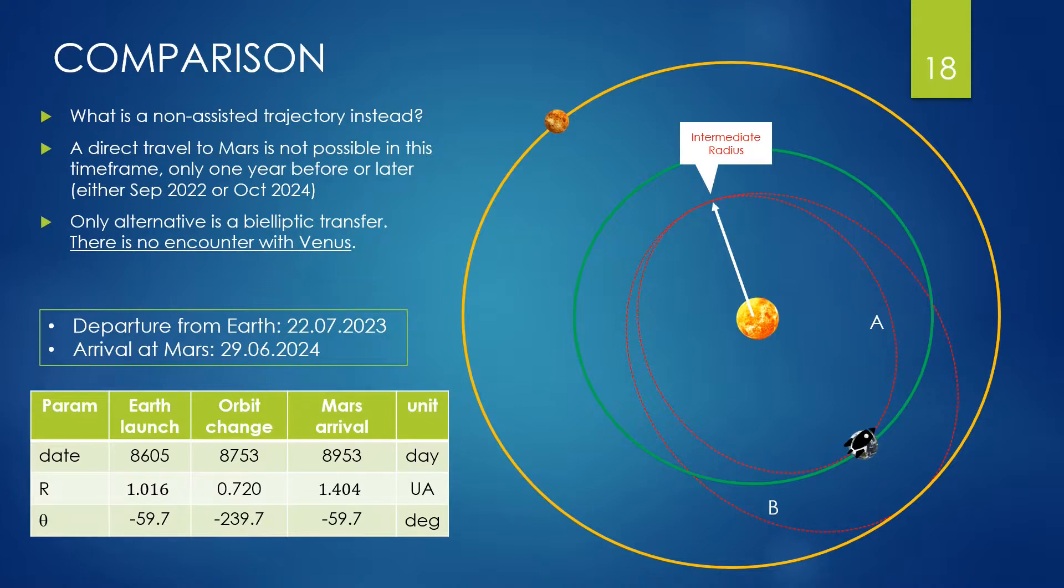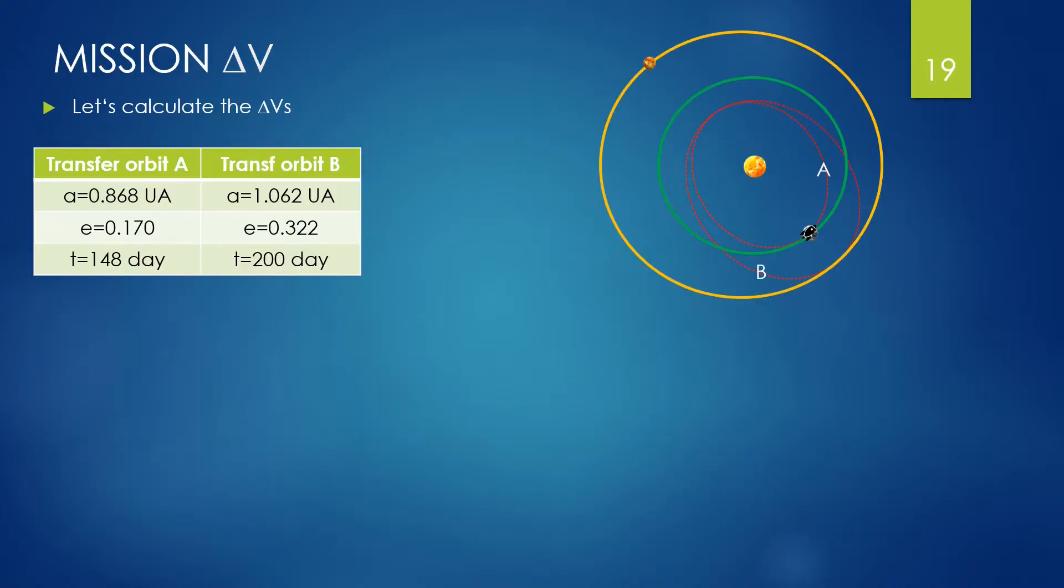The intermediate radius of the bi-elliptic trajectory is chosen to have more or less similar transfer time as for the journey already found. You can see that our probe is traveling along two elliptical trajectories, parallel to each other and tangent. On top, there are the geometrical data of the two transfer ellipses. The parameters are for orbit A and orbit B, respectively: A, the major semi-axis, E, the eccentricity, and the transfer time T.